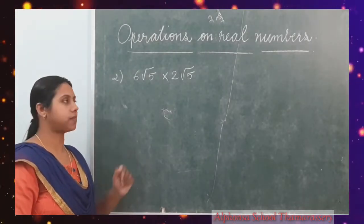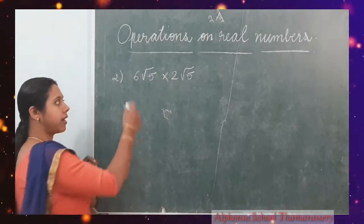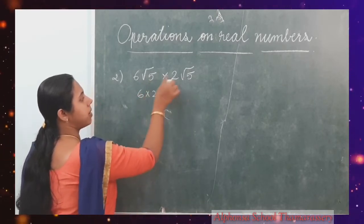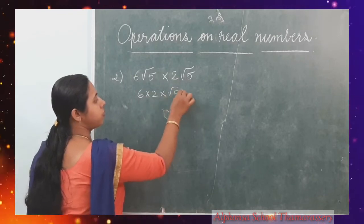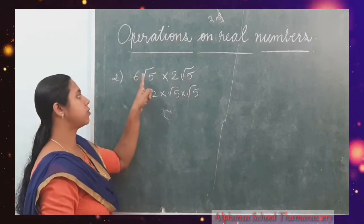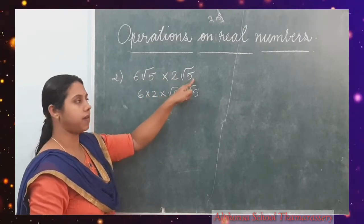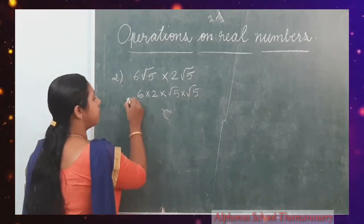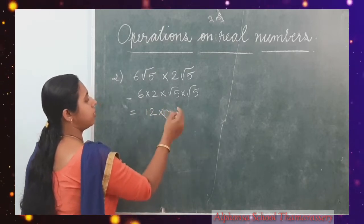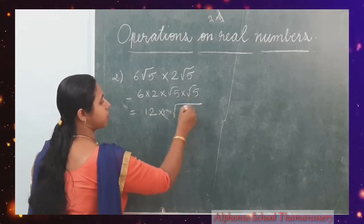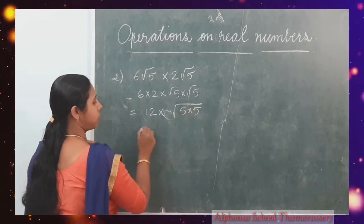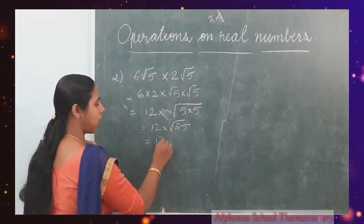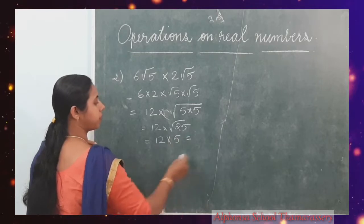When you multiply 6 root 5 into 2 root 5, you can multiply the rational numbers first: 6 into 2 gives 12, then root 5 into root 5, written as root of 5 into 5. So 12 into root 25 — root 25 is 5 — so 12 into 5 is equal to 60.